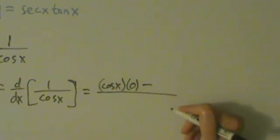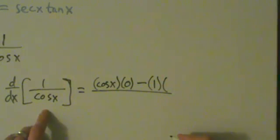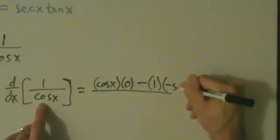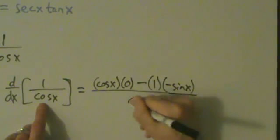And then we have minus the top, which is 1, times the derivative of the bottom. The bottom is cosine, so its derivative is negative sine of x. And then over the bottom squared.